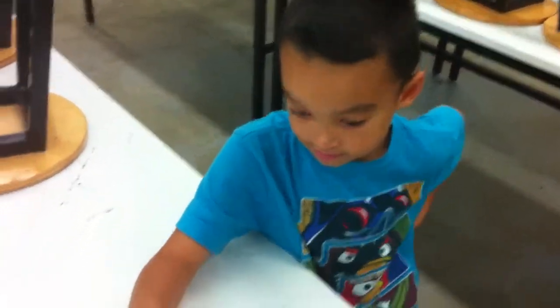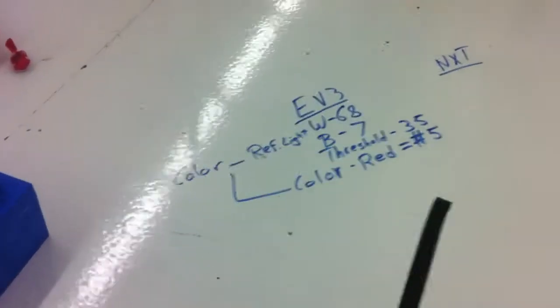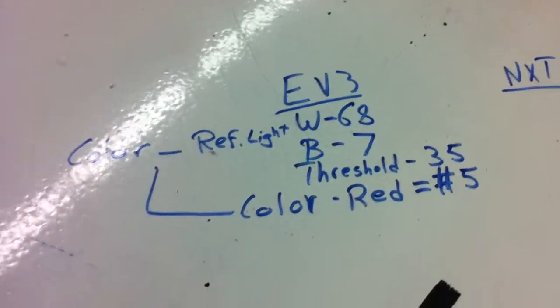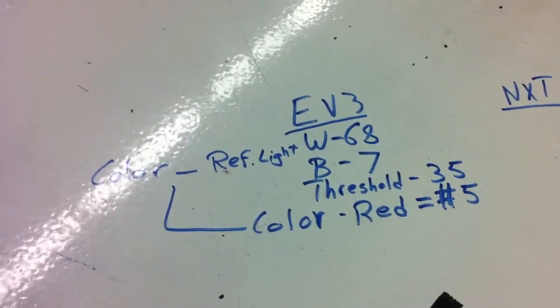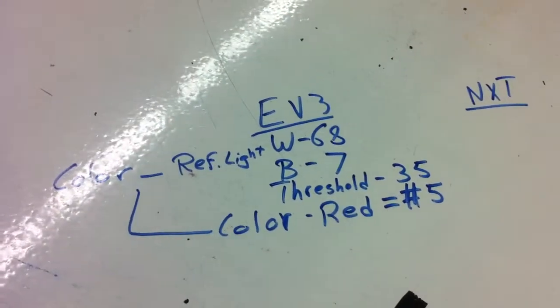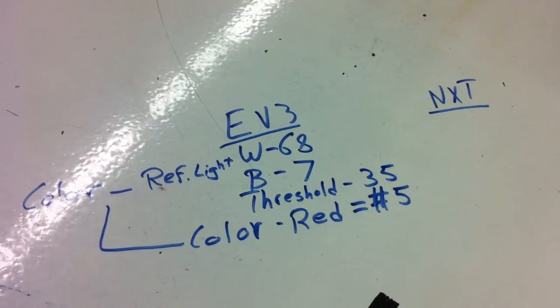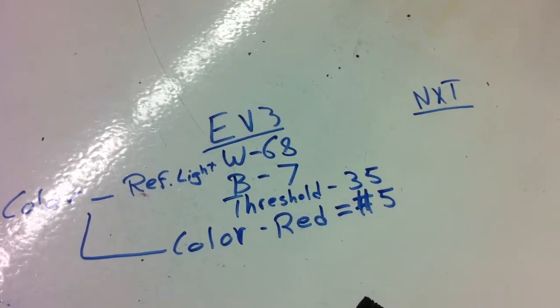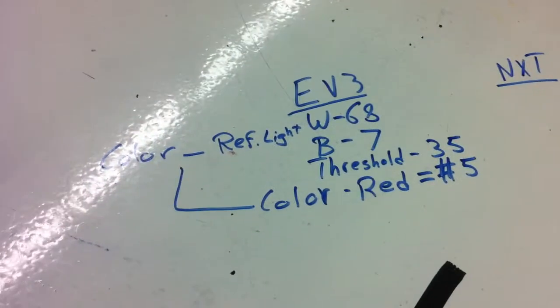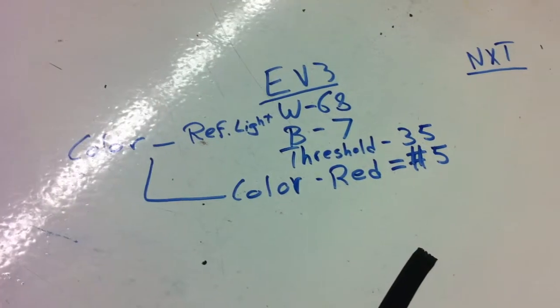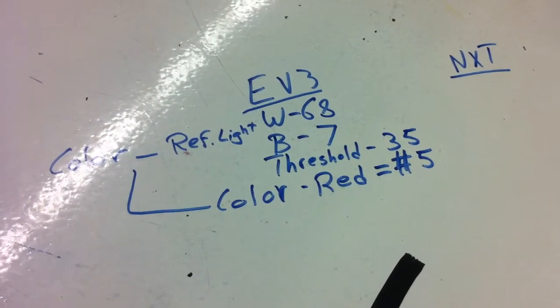I've got my helper Nathaniel right here. He's checking things out and will start things for us when we're ready. Over here, I just did a little calculation for the EV3 using the color sensor in the reflected light mode. We have the white table at 68, the black tape as 7, so I'm going to use a threshold of 35, and using the color sensor in the color mode, I got red as number 5.